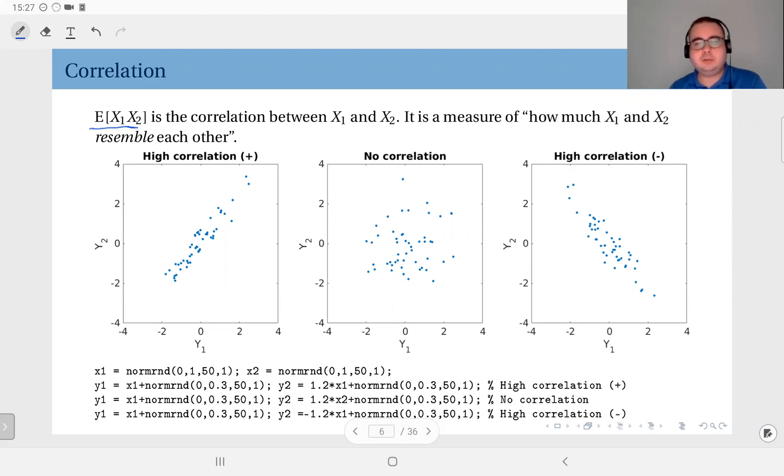And we'll talk about this again when we talk about random processes as opposed to random variables or vectors, and it will make more sense when we talk about random processes, when we make things time dependent. So it will be much more useful to talk about correlations then. But for the time being, in the general sense, correlation signifies how much the distributions X1 and X2 resemble each other.